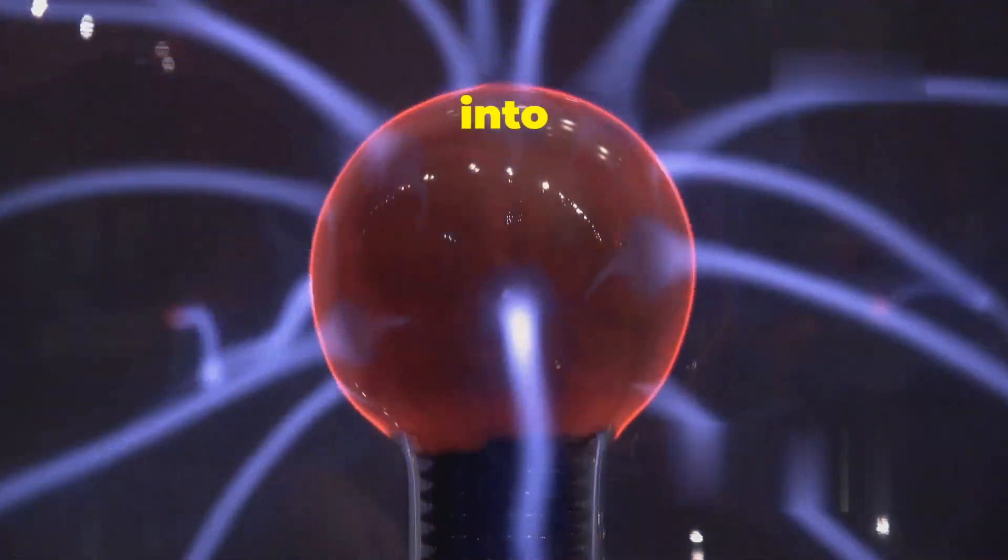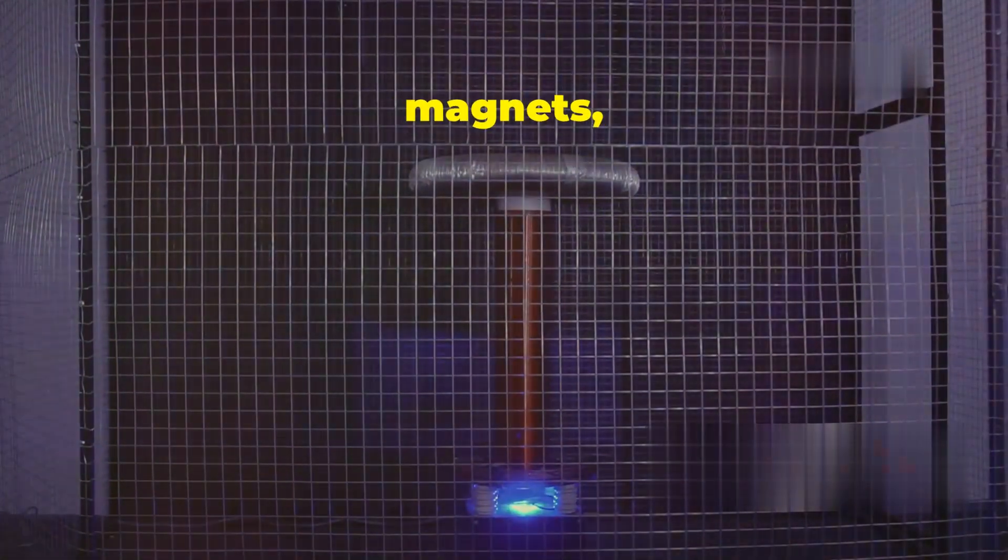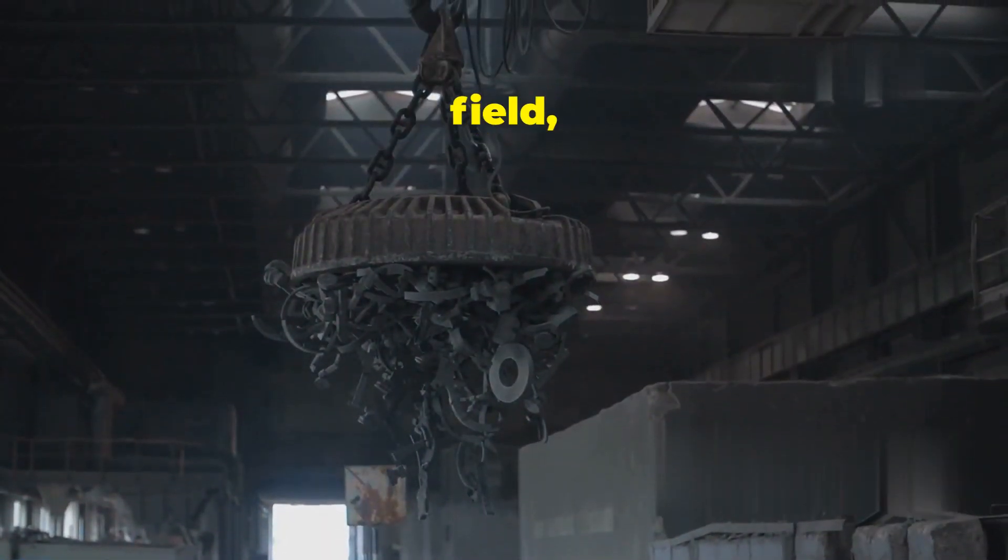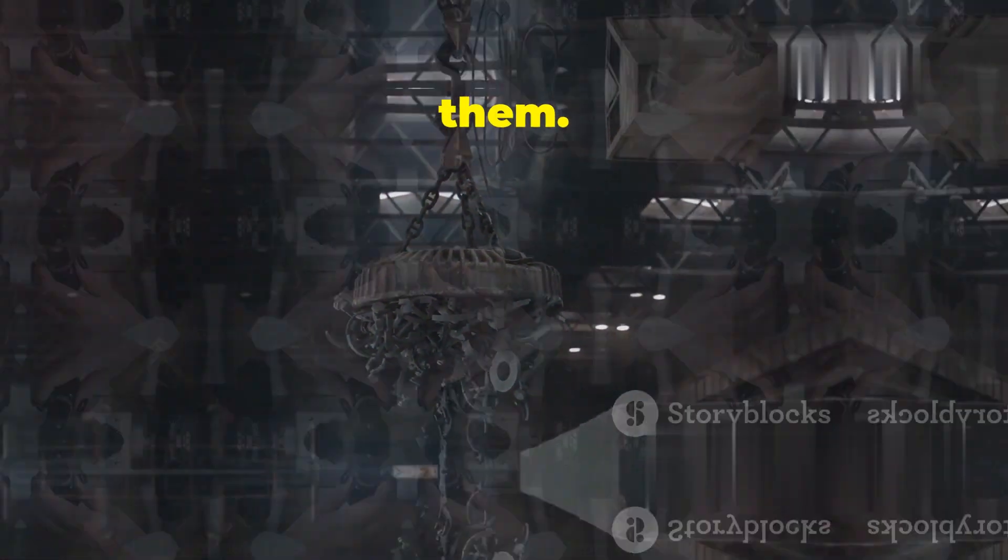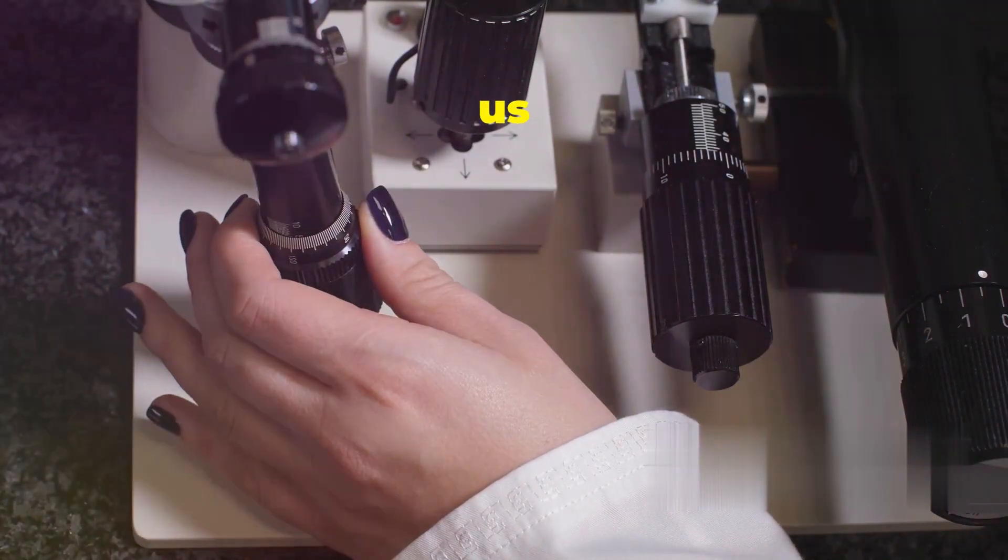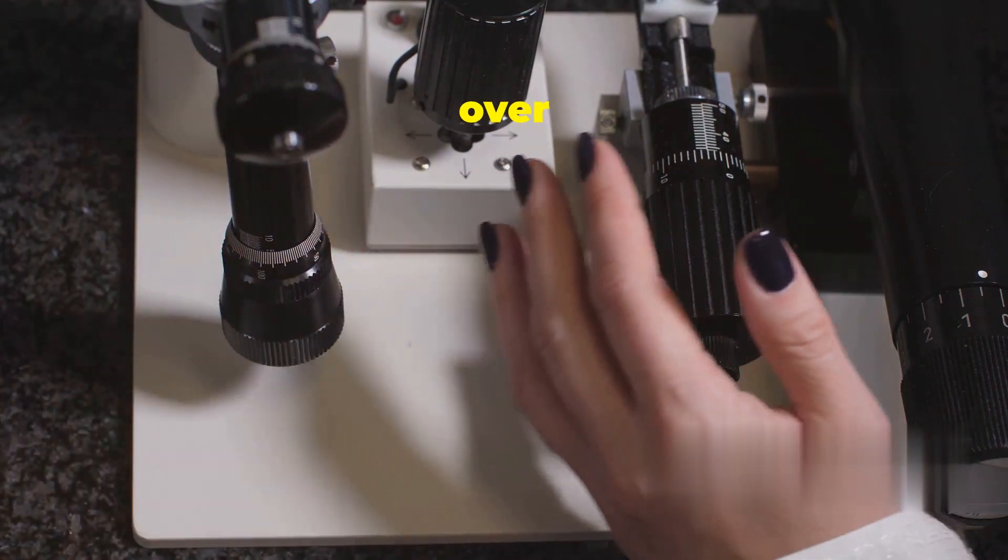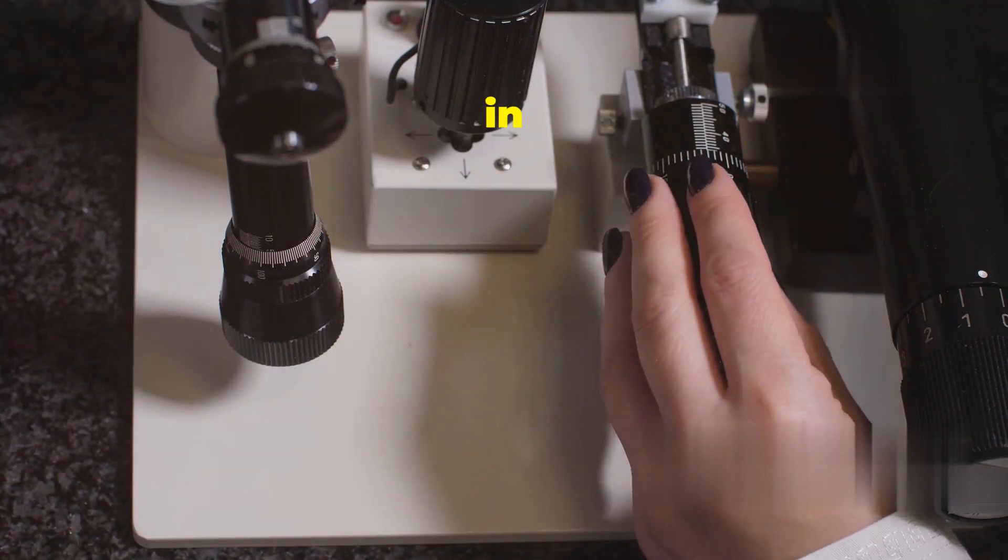Now, where do electromagnets fit into all of this? Unlike permanent magnets, which produce a constant magnetic field, electromagnets create a magnetic field only when an electric current flows through them. This key difference gives us incredible control over their magnetic properties, as we'll discover in the next section.